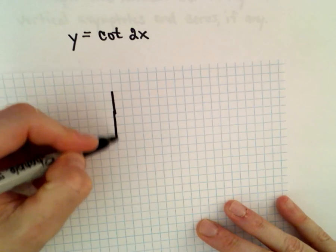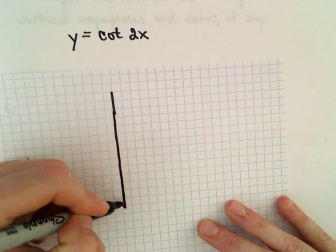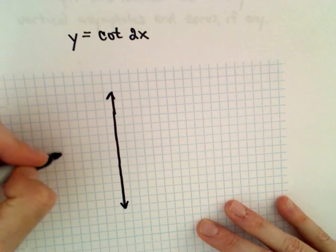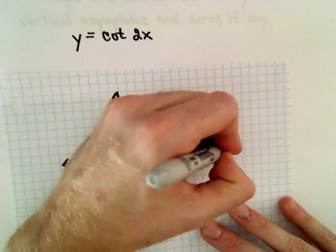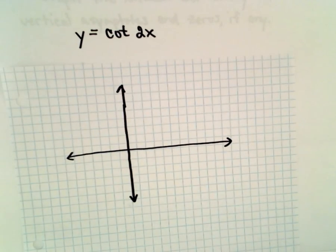This still has the same basic resemblance to cotangent of x. The only thing that's going to change here is the period.